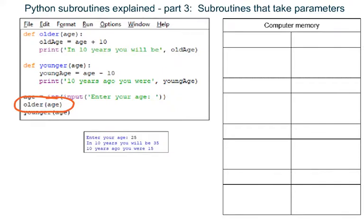The word age inside the brackets here tells Python that whatever data is sent to subroutine older must be stored in a local variable named age, so it can be used inside the subroutine.